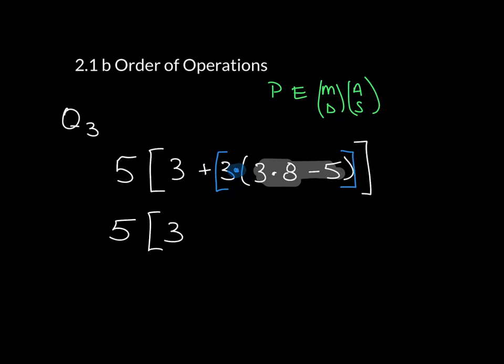So that's 5 times 3 plus 3 times the quantity of 24 minus 5 and 24 minus 5 is just 19. So I'm going to go through and write that down in here and then the brackets close on the outside.